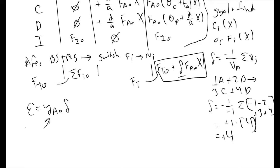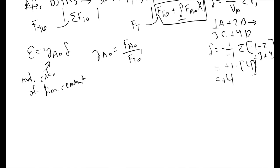So what we do is we use the value we found here for delta to define another value called epsilon. Epsilon is equal to YA0 times delta. YA0 is the molar ratio of the limiting reactant. In this case, YA0 would equal FA0 over FT0, the sum of all the inlet molar flow rates. Once we know the value of epsilon, we can use it to figure out what the volumetric flow rate is as a function of conversion throughout our reactor.